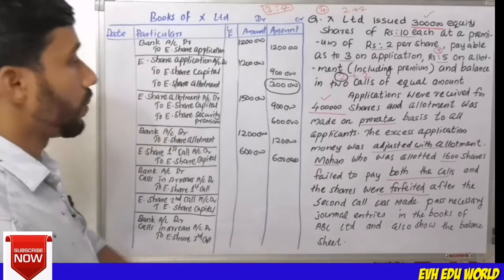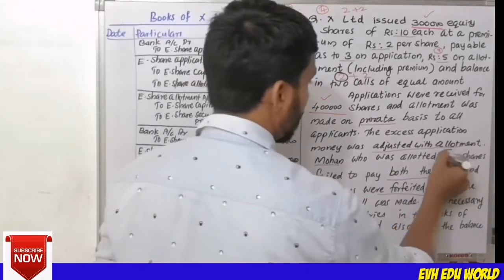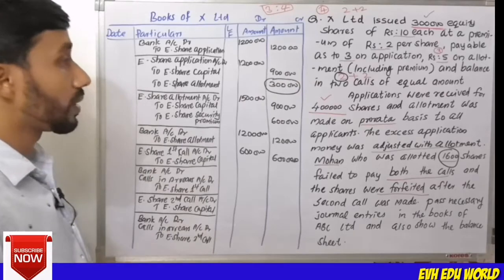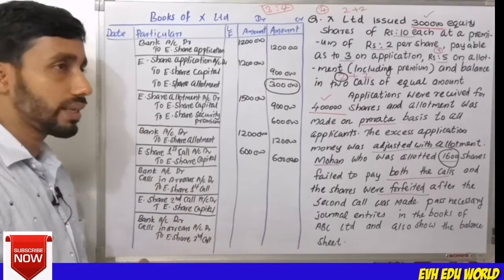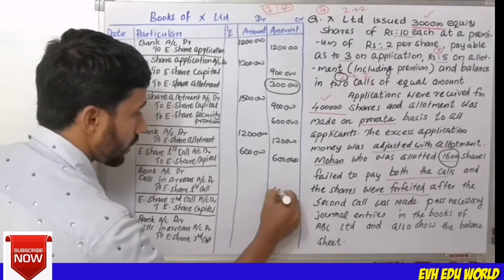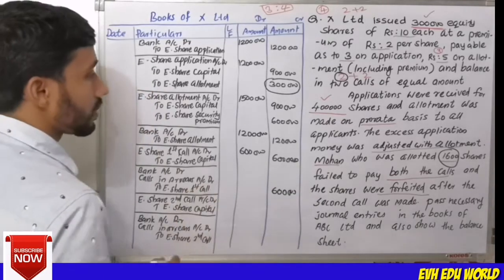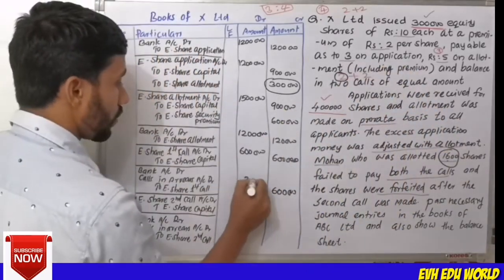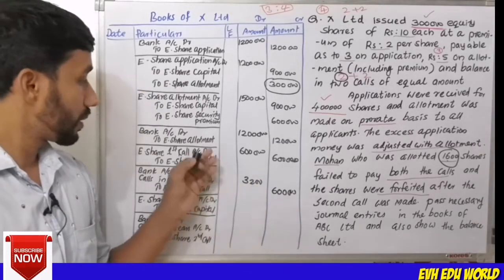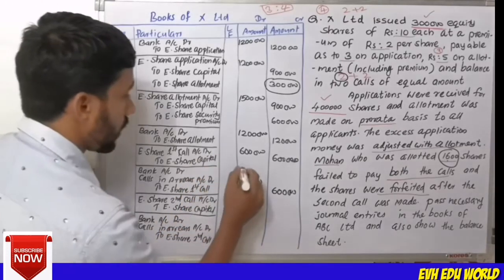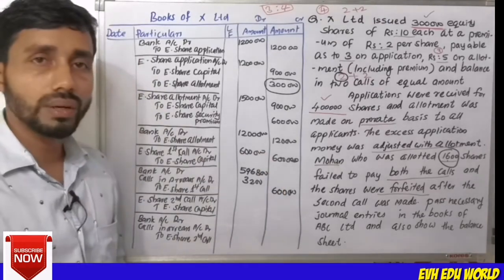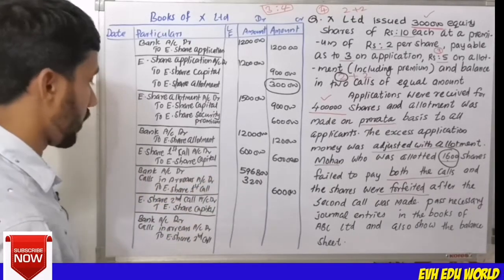For Mohan's 1,600 shares, the first call amount is Rs.2 per share, totaling Rs.3,200. You also get calls in arrear. The equity share first call account is Rs.6,000. If there is a call in arrear scenario — 1,600 shares at Rs.2 — the balance goes to the bank account.